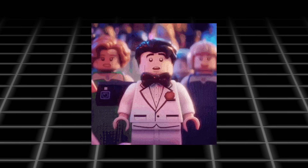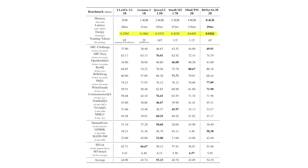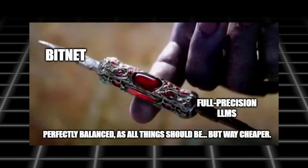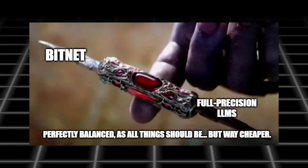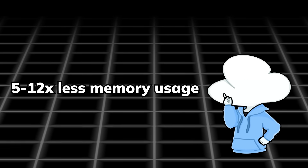This budget makes BitNet incredibly attractive, especially with its 0.4 GB memory footprint while being comparable to Qwen 2.5 1.5B — which is 5 times its size and trained with 18 trillion tokens, 4.5 times more than BitNet. Energy use is around 12.4 times less than comparable models — still roughly 10 times less energy across the board while having the same performance, plus 5 to 12 times less memory usage.